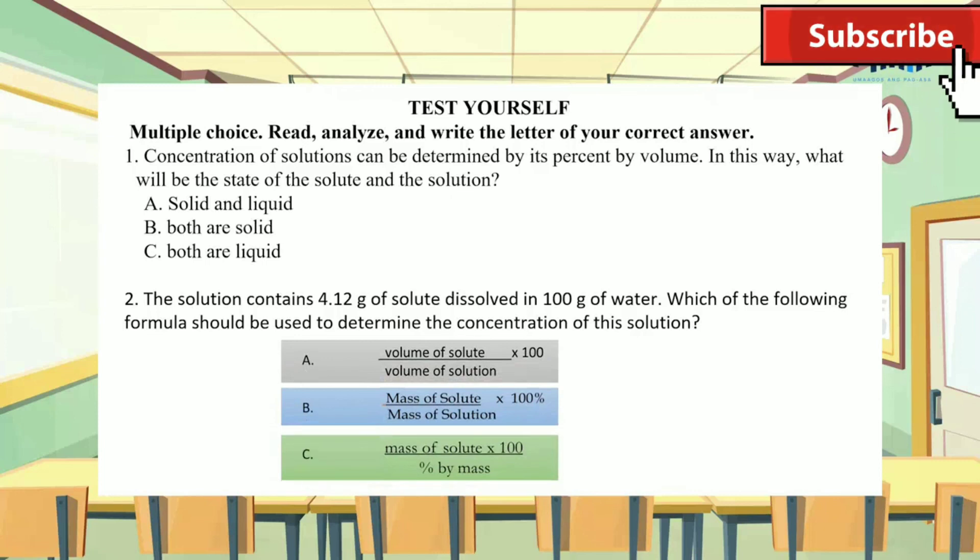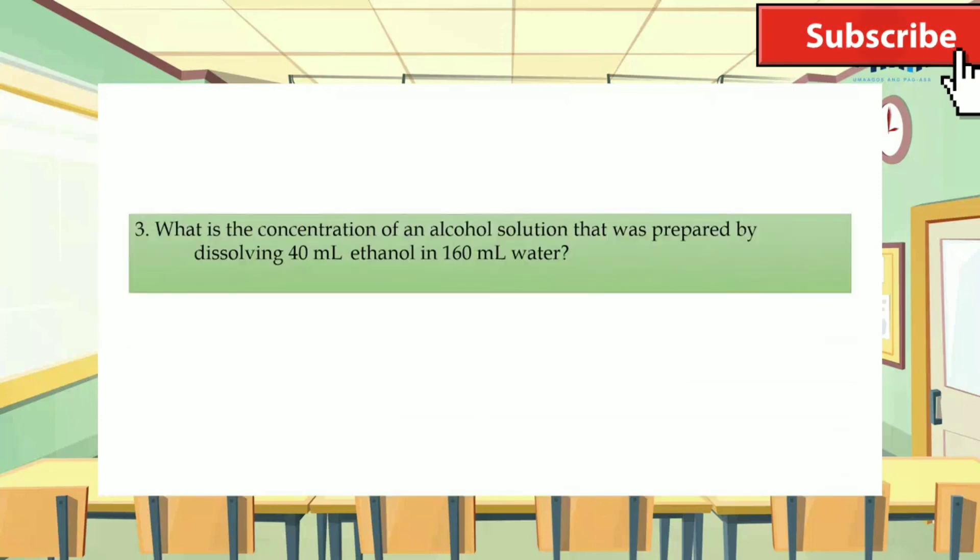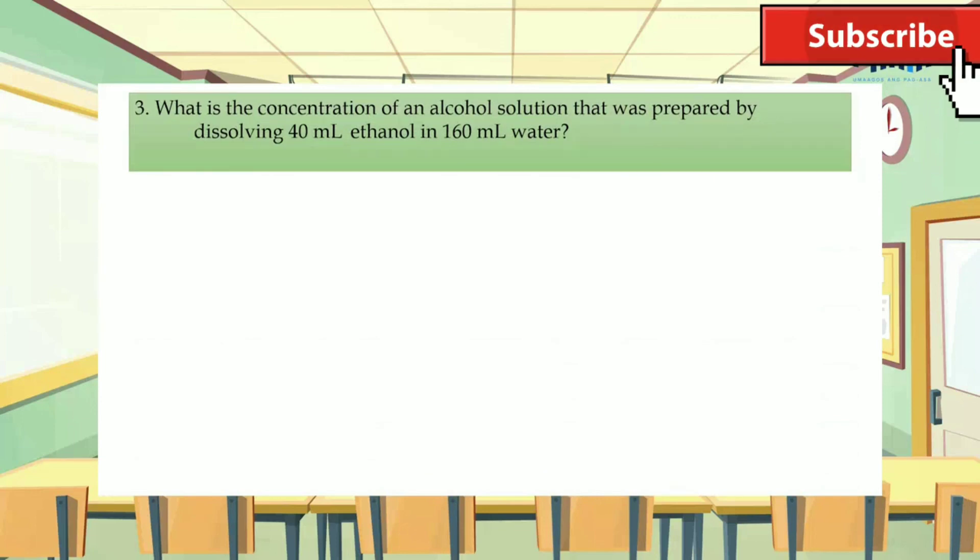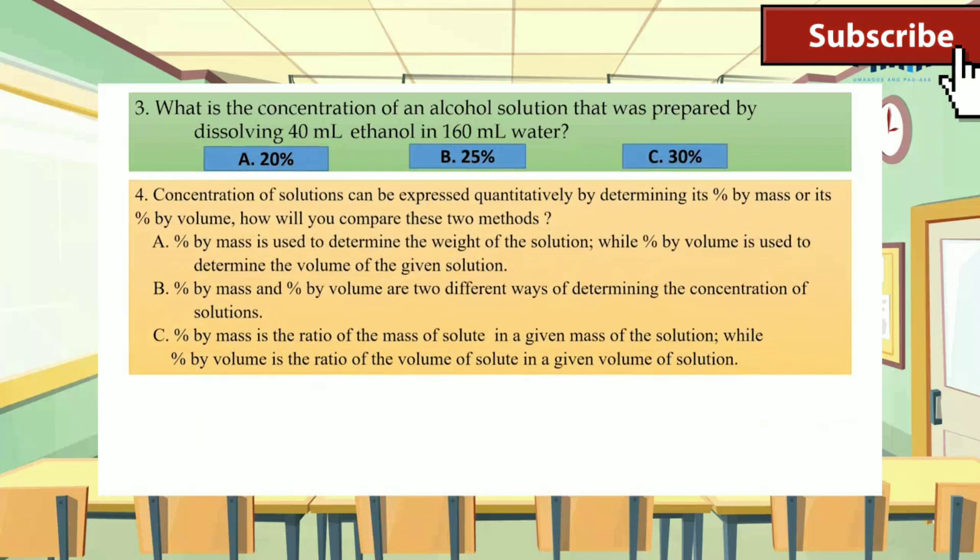Again, you can pause this video, read the questions, analyze, and compute, then write the letter of your correct answer. Question number three with its choices A, B, or C? Number four and number five.